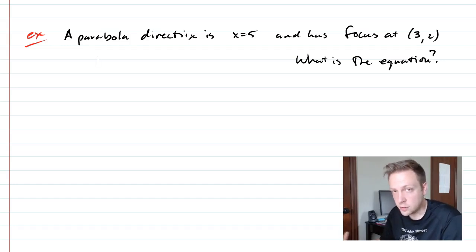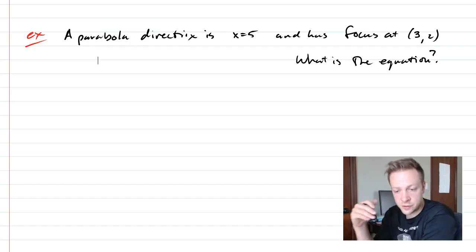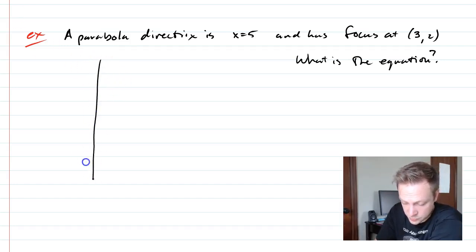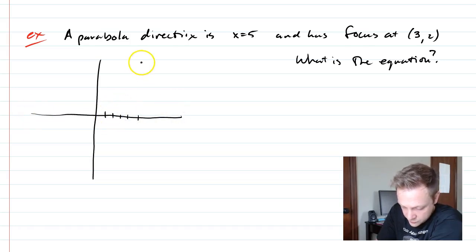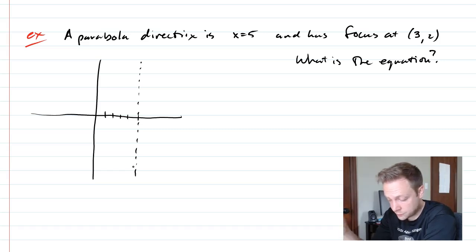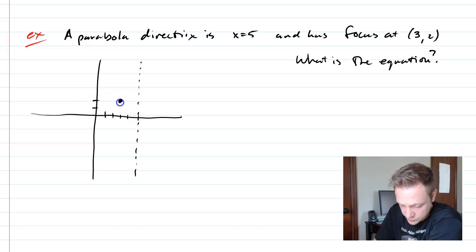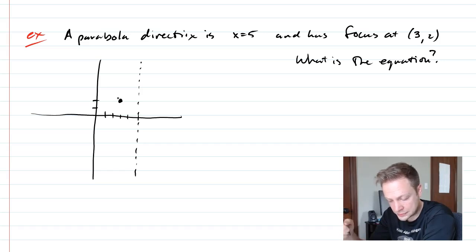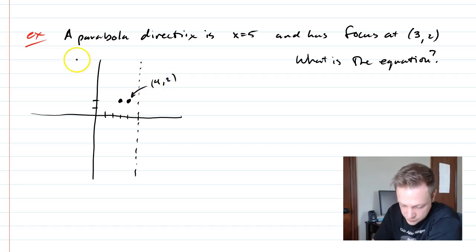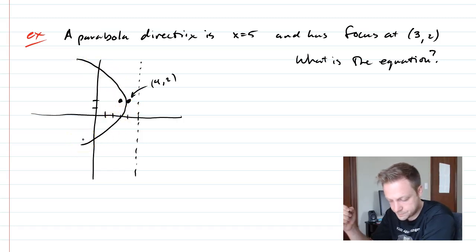Now let's talk about translations — parabolas not centered at (0, 0). Given a parabola with directrix x = 5 and focus at (3, 2): drawing a picture, the directrix is a vertical line at x = 5, so the parabola is horizontal, opening left or right. The focus is at (3, 2). The vertex must be exactly halfway between the focus and directrix, so the vertex is at (4, 2).